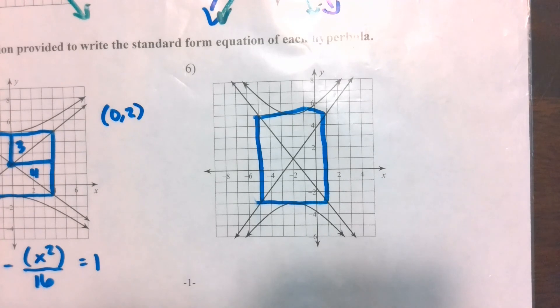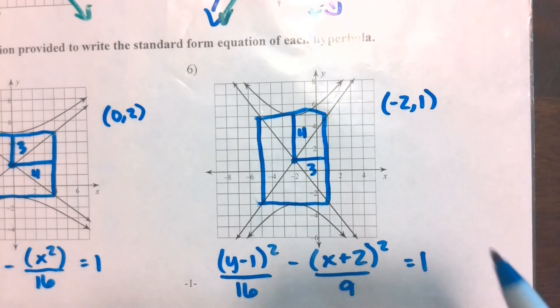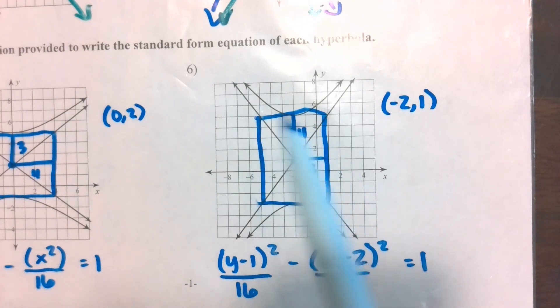Go ahead and see if you can write the equation for number six on your own. So number six turns out really similar. Our center is this (-2, 1), so we should have a (y - 1) and an (x + 2). It's still vertical, so I'm still going to have that y term first. And then now my four and my three have just switched. So my vertical distance is four, underneath the y should be 16. My horizontal distance is three, so underneath the x should be nine.